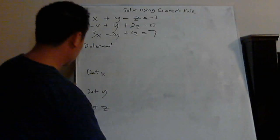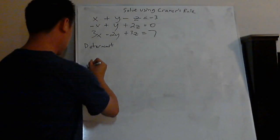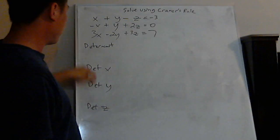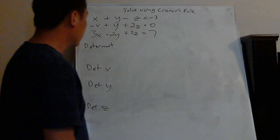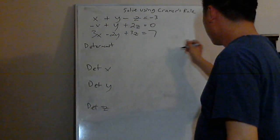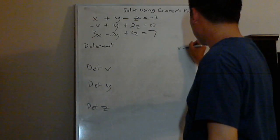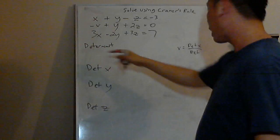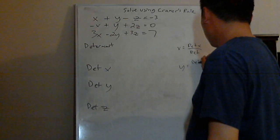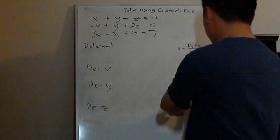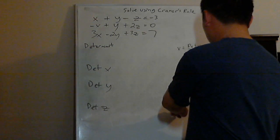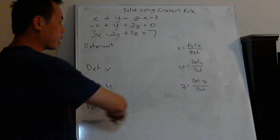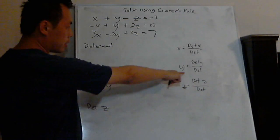You basically need to find these four values. Then the answer to x is always going to be x equals determinant x over determinant (dt). Y equals determinant y over determinant. Z equals determinant z over determinant. Once you find these four, you just plug them in — and that's your answer.